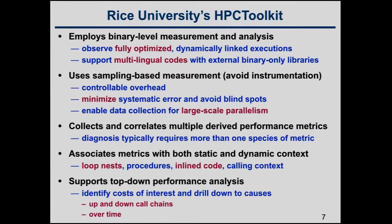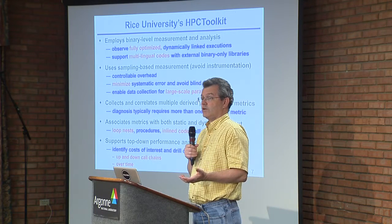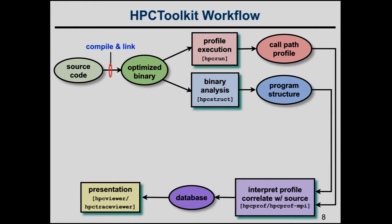If you find the overhead is too high, you can just increase the sampling period and reduce your overhead. What we want to do with sampling is minimize systematic error and avoid blind spots. We're collecting data through your program, through libc, through the math libraries, through the OpenMP runtime systems. The strategy we've been working on is to collect data for large-scale parallelism. The tool collects and correlates multiple derived performance metrics, and associates the metrics with both static context — procedures, loop nests, and inline code — and dynamic context, meaning calling context.